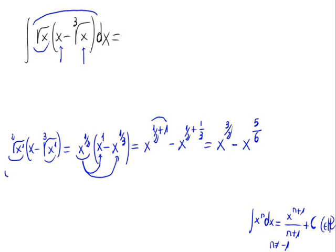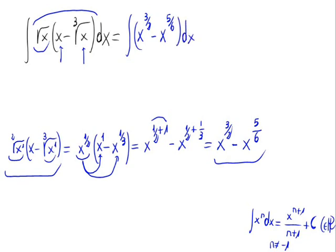Now, we've calculated the product we had in the integral. Let's substitute this product, so we would have the integral of x raised to 3 halves minus x raised to 5 sixths. We know that the integral of a subtraction is the integral of each element of the subtraction. That would be equal to the integral of x raised to 3 halves minus the integral of x raised to 5 sixths.